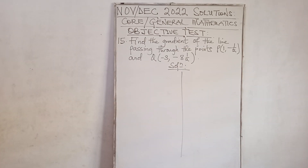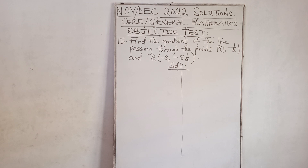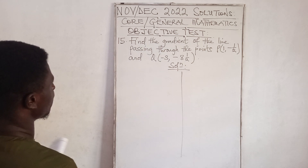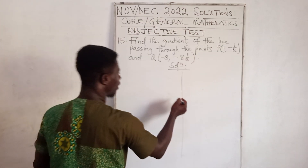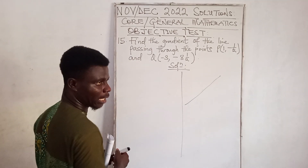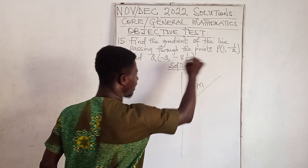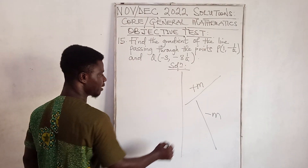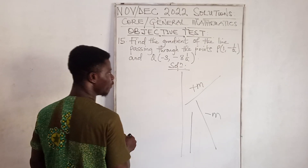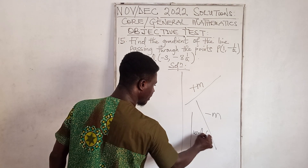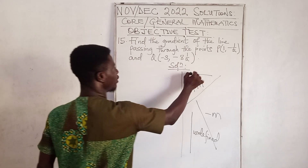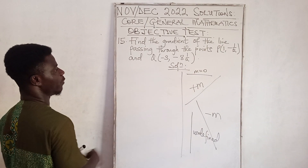Question 15: Find the gradient of the line passing through the points P(1, −½) and K(−3, −8½). The gradient, also called slope or steepness, tells us the inclination of the line. An upward slope gives a positive gradient, a downward slope gives a negative gradient, a vertical line gives undefined gradient, and a horizontal line gives zero gradient.